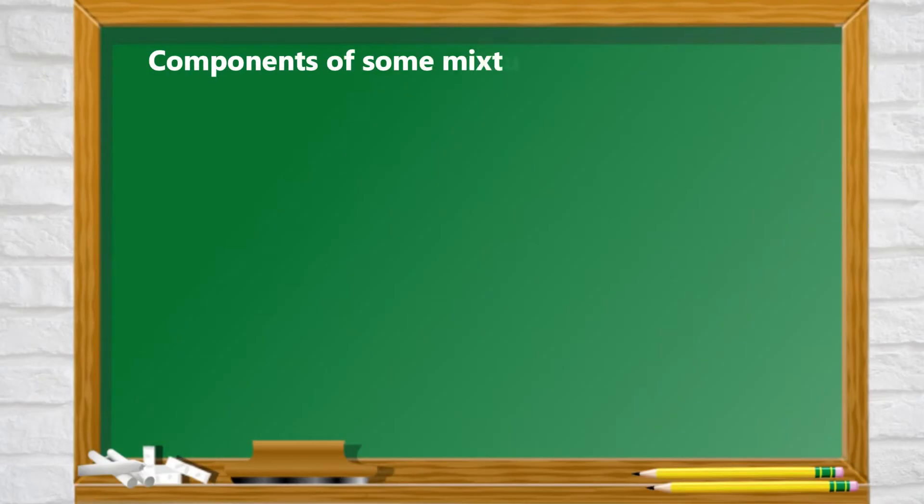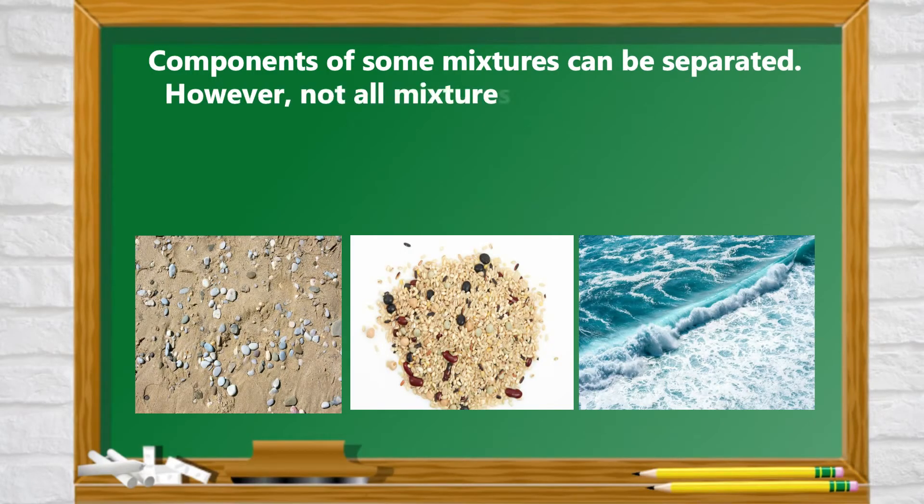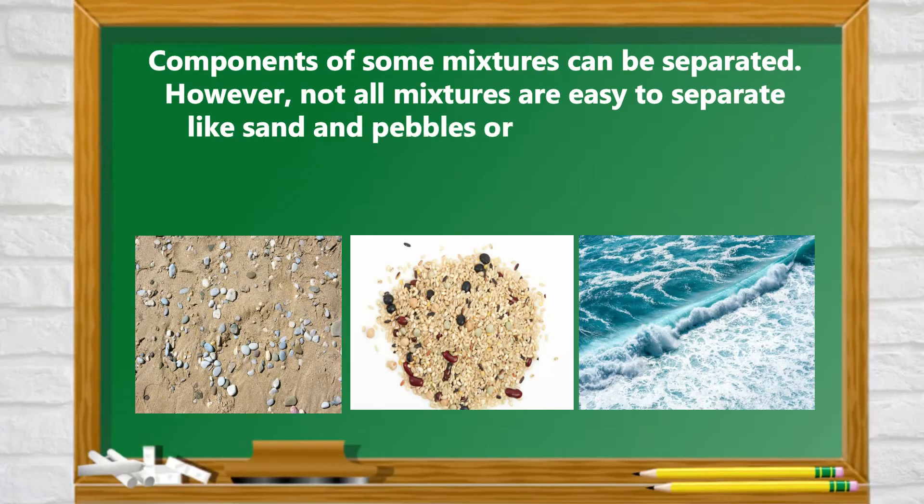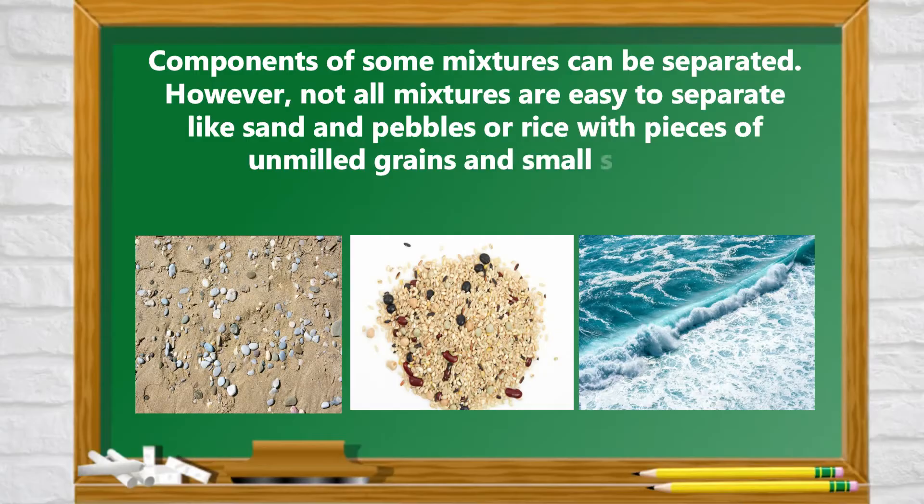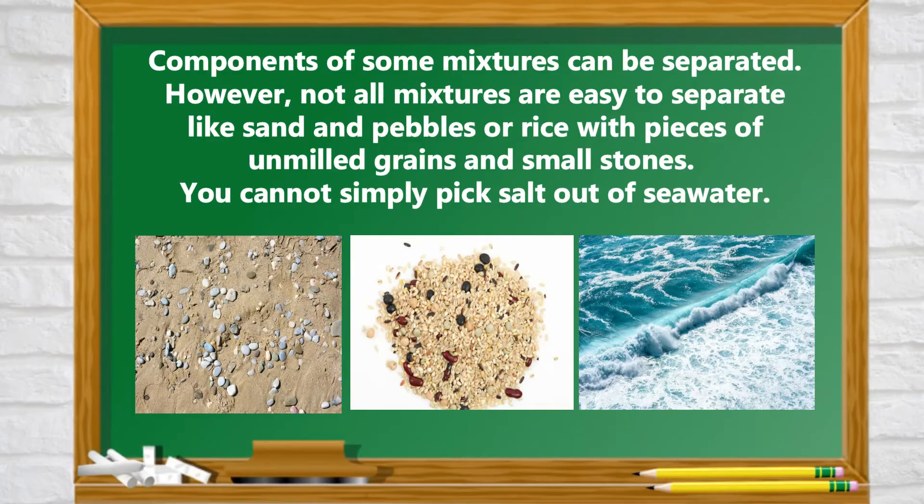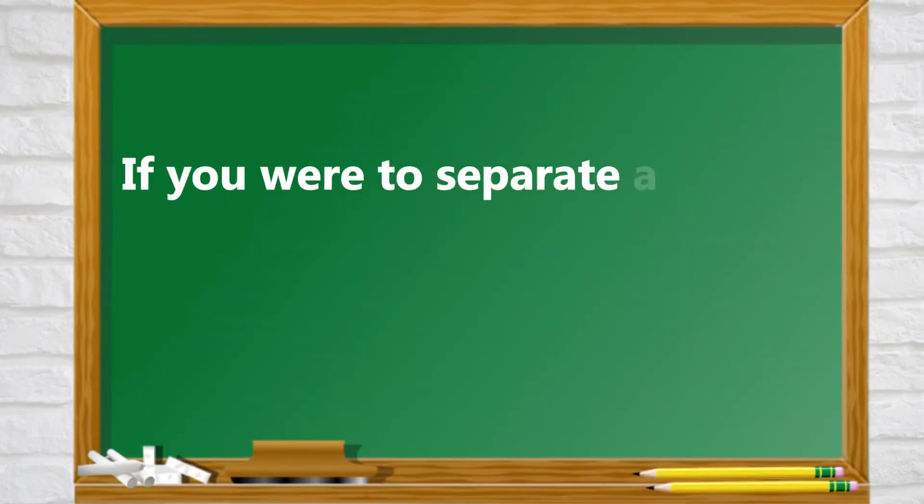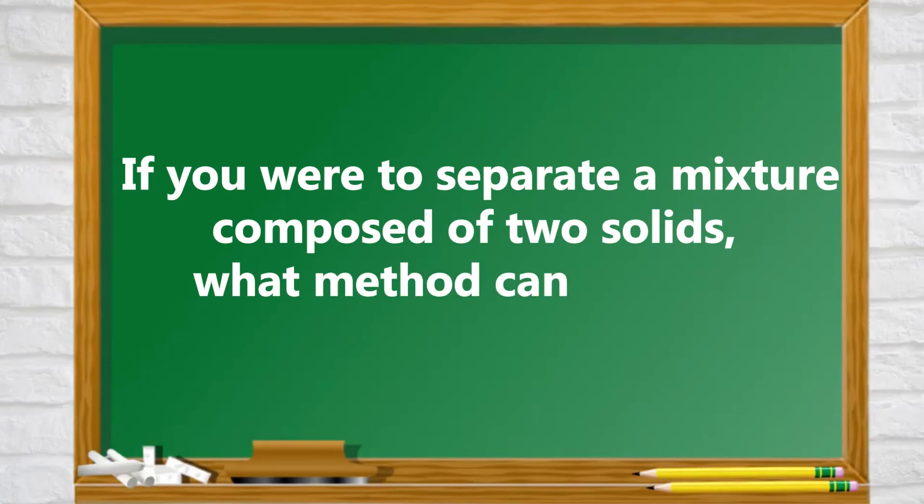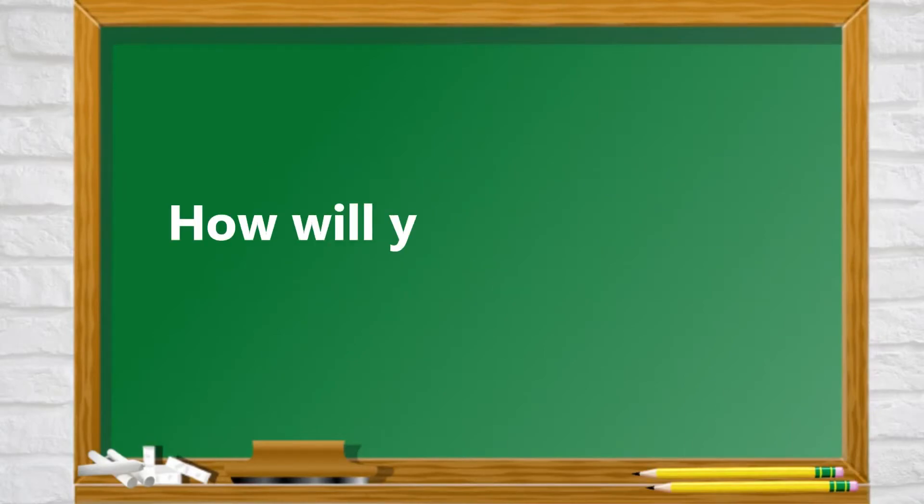Components of some mixtures can be separated. However, not all mixtures are easy to separate like sand and pebbles or rice with pieces of unmilled rice and small stones. You cannot simply pick salt out of seawater. If you were to separate a mixture composed of two solids, what method can you use? How will you separate salt from seawater?